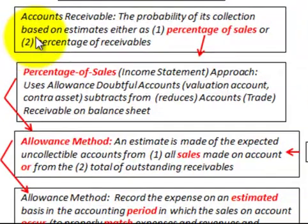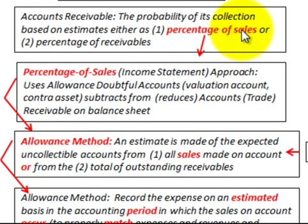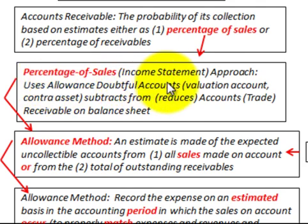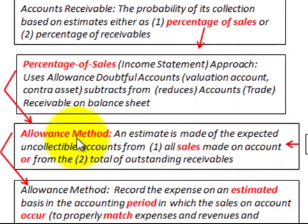Let's define what we're talking about. We have accounts receivable and we're looking at the probability of collection based on estimates — either the percentage of sales or the percentage of receivables. For the percentage of sales, that's the income statement approach, and it uses the allowance for doubtful accounts — a valuation account, which is a contra asset account that reduces accounts receivable on the balance sheet.